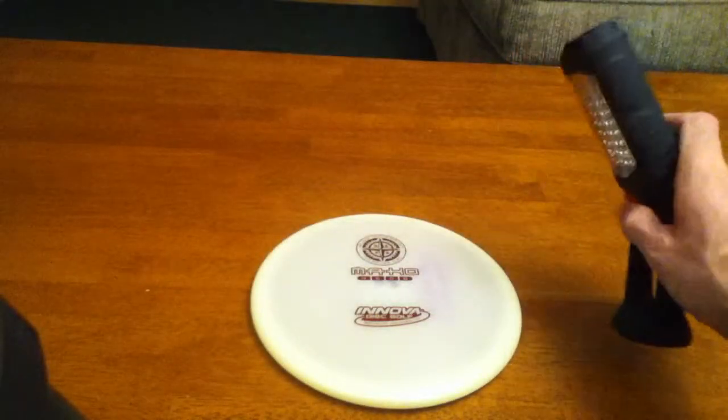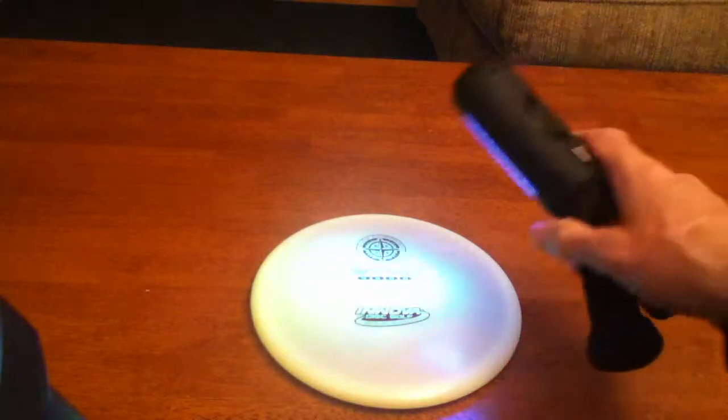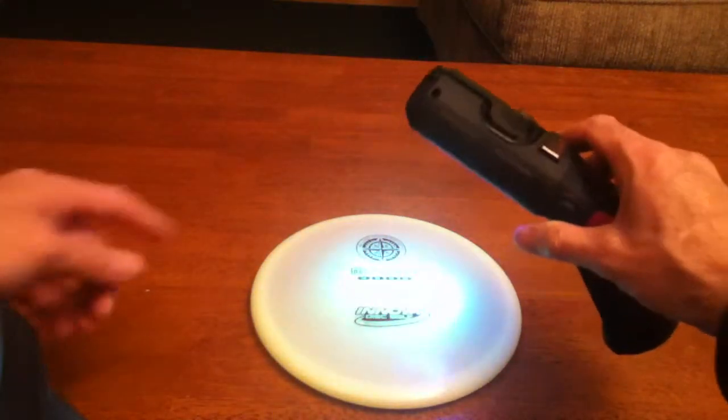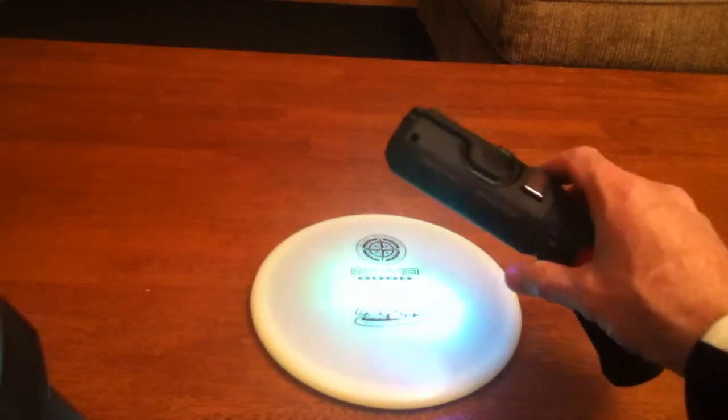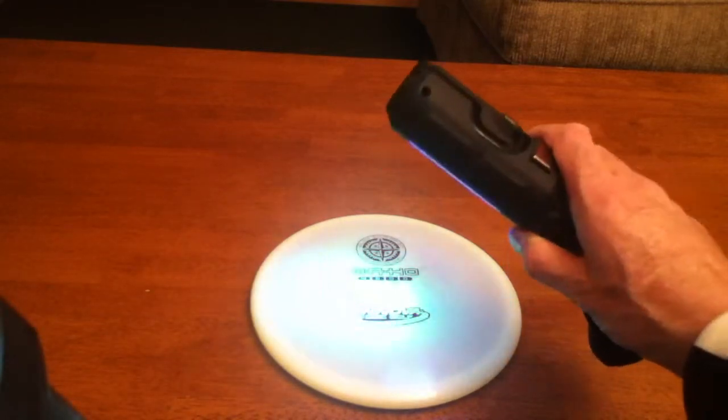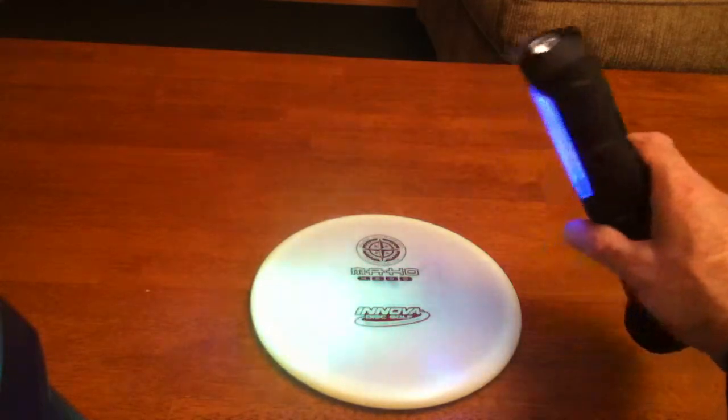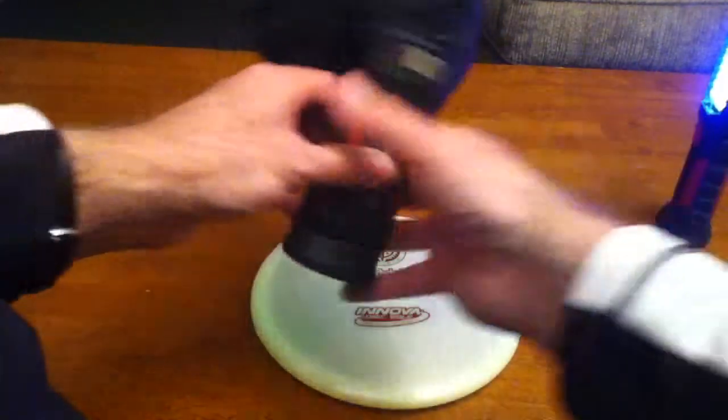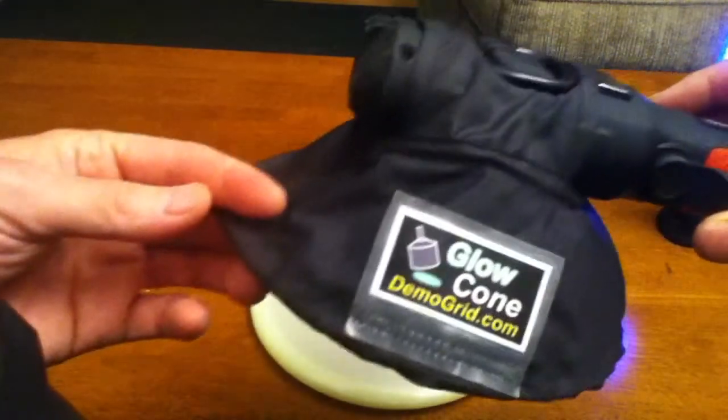One of the problems with energizing the disc using a UV light is light reflecting off the disc will hit your eyes and it will affect your night vision. So one of the attachments that is available for UV light is called the glow cone.